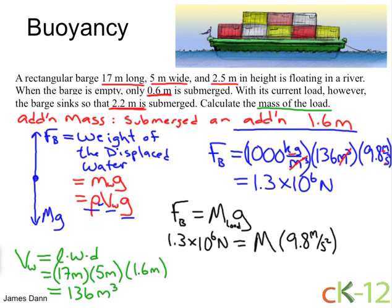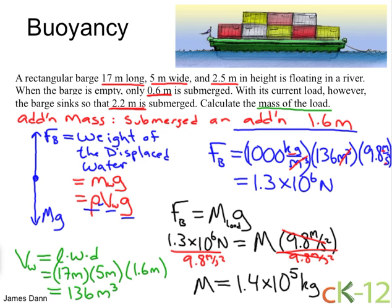And all that's left to do is divide both sides by the 9.8 meters per second squared. Cancel, cancel. Newtons divided by meters per second squared is a kilogram. And therefore, the mass of the load is equal to 1.4 times 10 to the fifth kilograms.